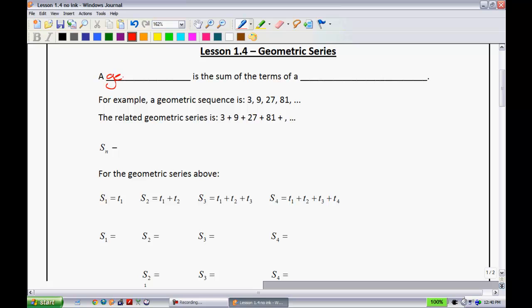A geometric series is the sum of the terms of a geometric sequence. For example, a geometric sequence is 3, 9, 27, 81. The related geometric series, of course, all I've done is I've just put plus signs in between there.